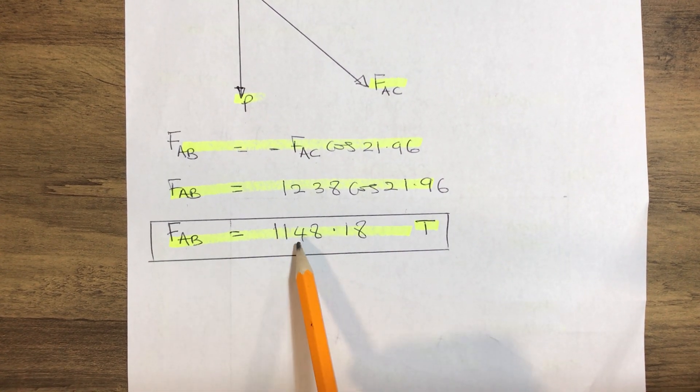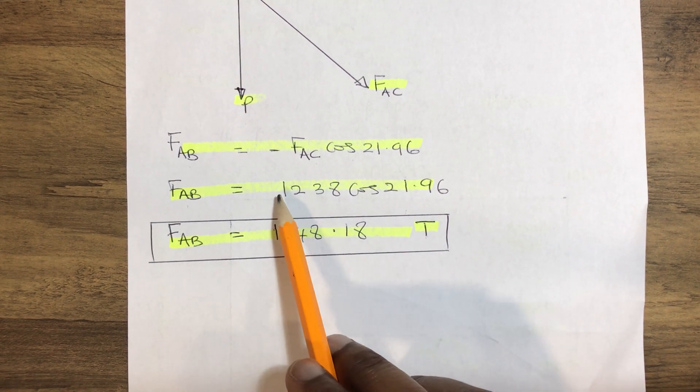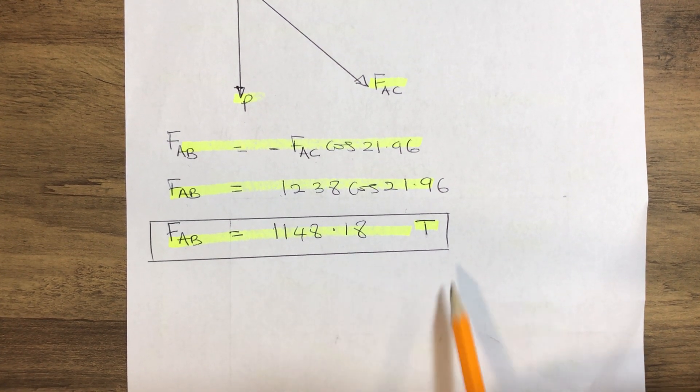So FAB equals 1148.18 in tension. The fact that it is positive shows our FAB is in tension, so it's acting outward from the point AB.